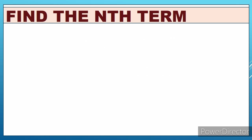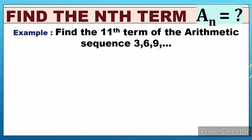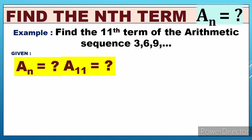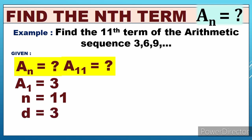For the first objective, we find the nth term, a sub n. If a sub n is unknown, here's what we do. Example: find the 11th term of the arithmetic sequence 3, 6, 9. The first step is to find the given. A sub n is unknown — specifically a sub 11. A sub 1, the first term, is 3. The number of terms n is 11, and d, the common difference, is 3.